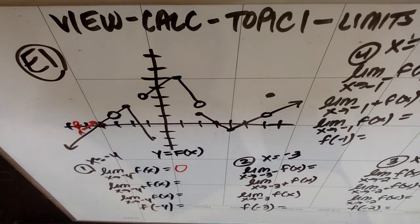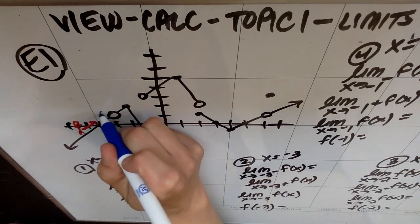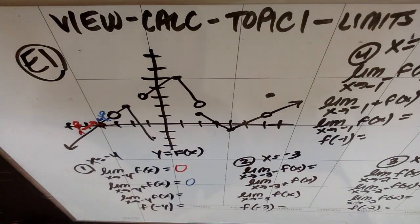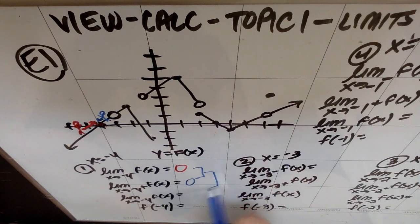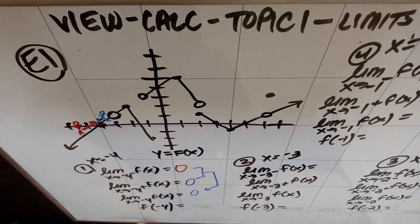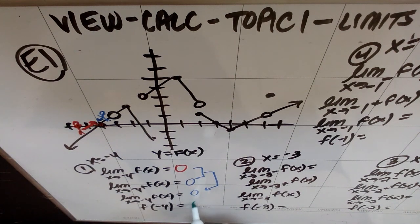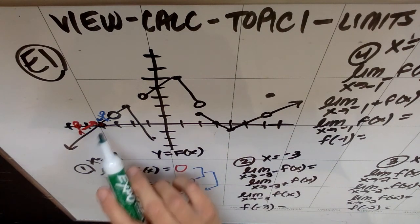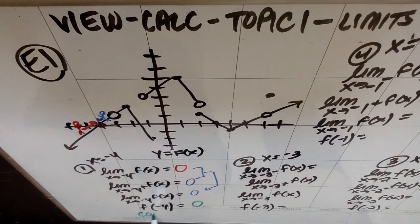If I did the same thing with a guy on the right of the curve, just immediately to the right of where x is negative four, and had him walk towards negative four, he'd also be walking towards a y value of zero. Because these two numbers are the same, that gives me the value for the double-sided limit, which is also zero. And f of negative four — what's the y value at negative four — that is also zero. The reason all of these are the same is because this is a continuous point.